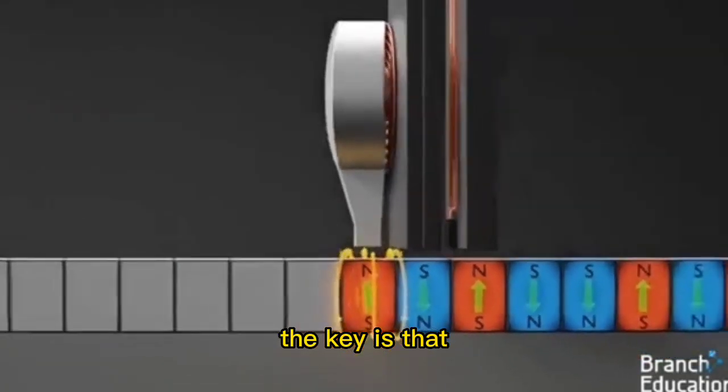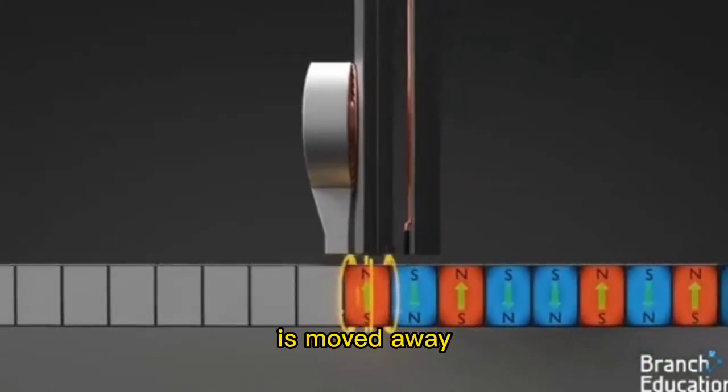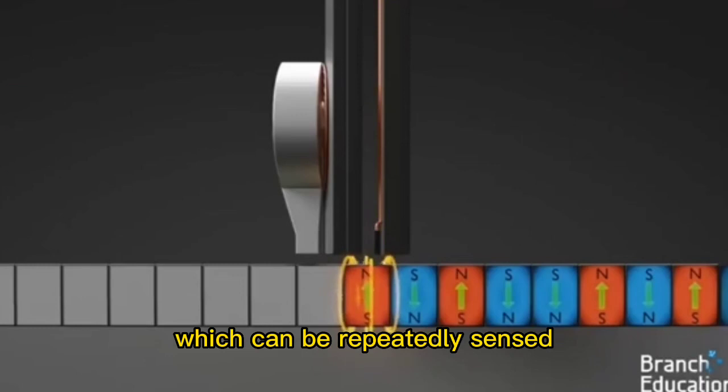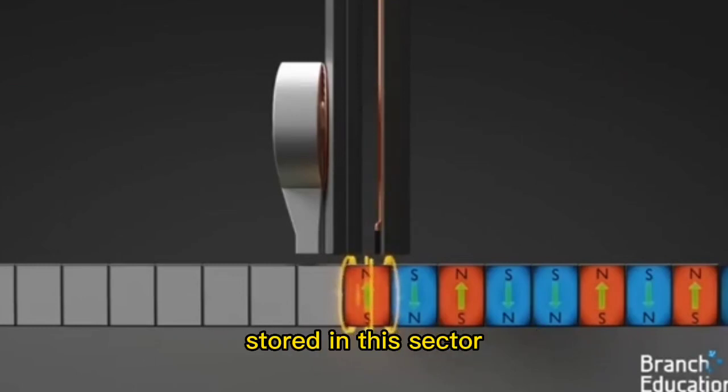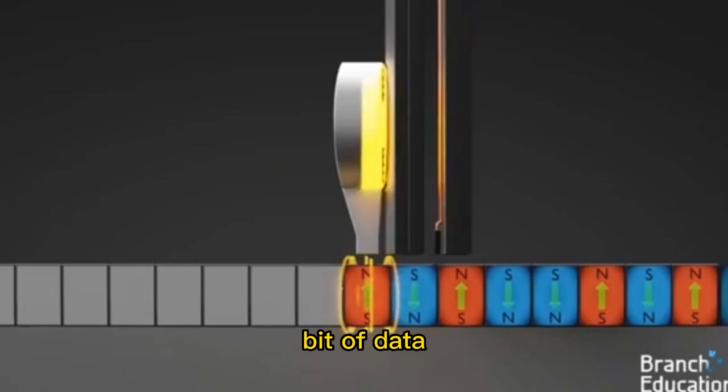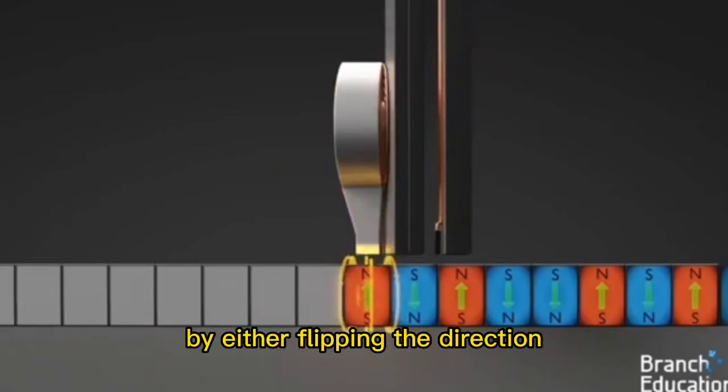The key is that even when the write head is moved away, the direction of the magnetic domains in this layer of the disk is maintained for years, and they emit a permanent magnetic field which can be repeatedly sensed by the read head every time you read out the data stored in this sector. That is, of course, until the computer and write head rewrite a new bit of data to the domain by either flipping the direction or keeping it the same.